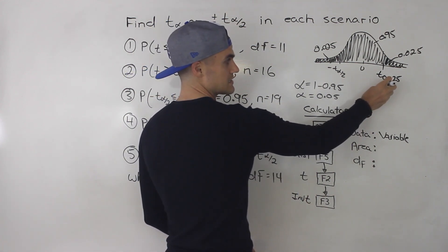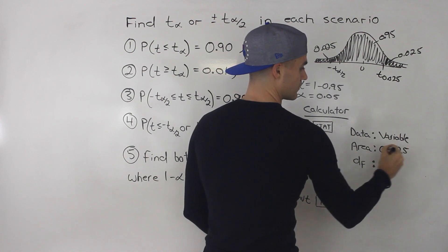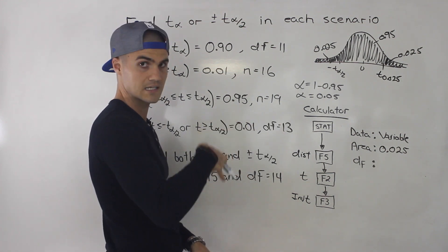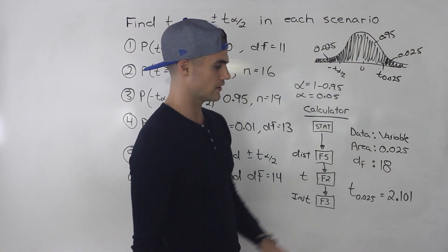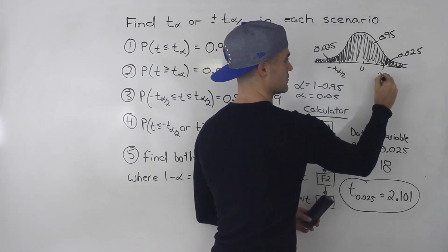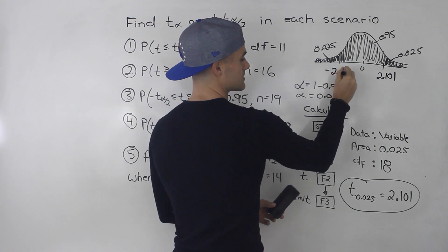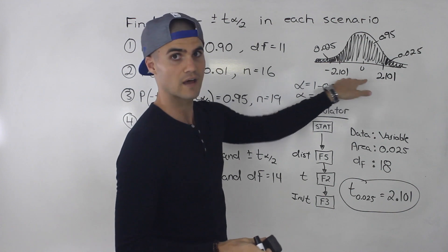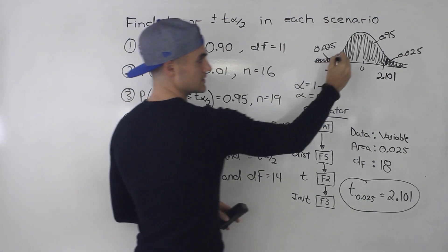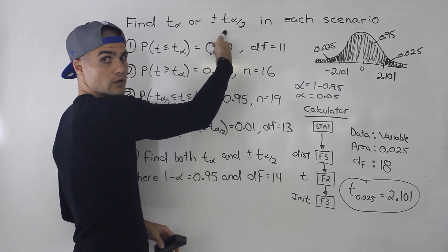So we can find the positive t value first. The area to the right of that t value is 0.025. The sample size is 19, so degrees of freedom is 19 minus 1, which is 18. When you run that in the calculator, you get 2.101. So the positive t value is 2.101, and since the distribution is symmetrical, the negative t value is negative 2.101. So plus or minus 2.101 is the answer to number three.